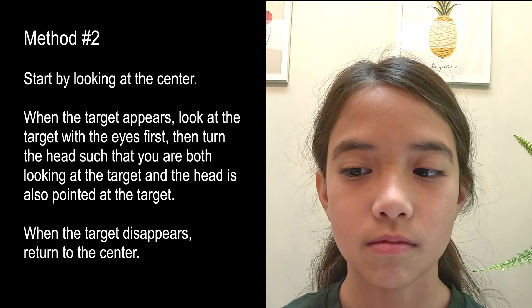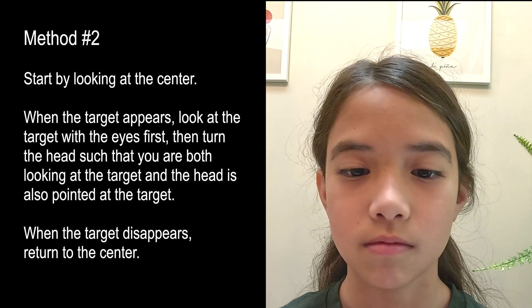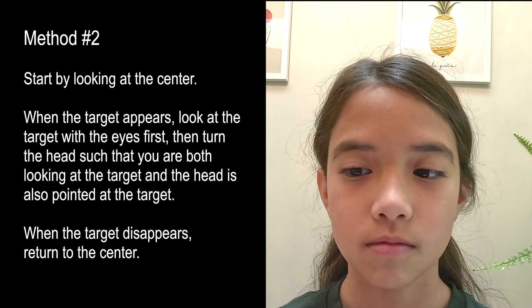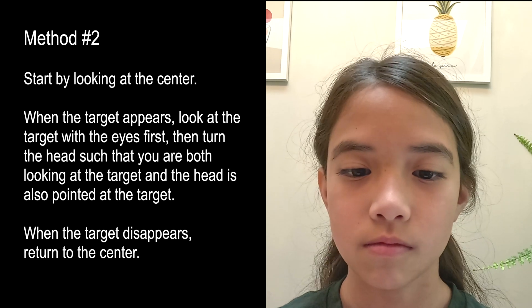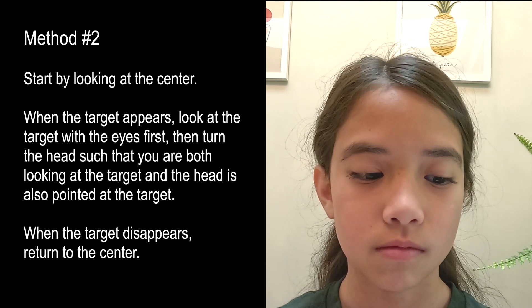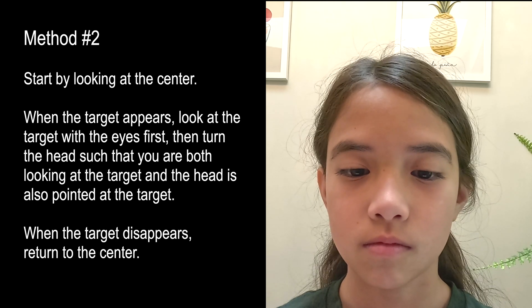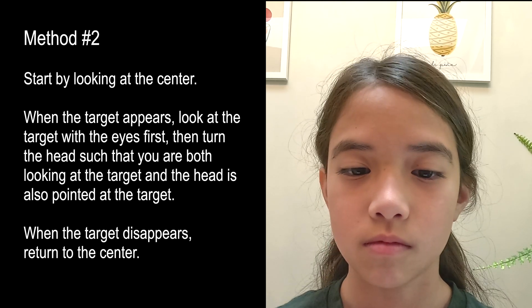Method number two is to start by looking at the center. When the target appears, look at the target with the eyes first, then turn the head such that you are both looking at the target and the head is also pointed at the target. When the target disappears, return to the center.